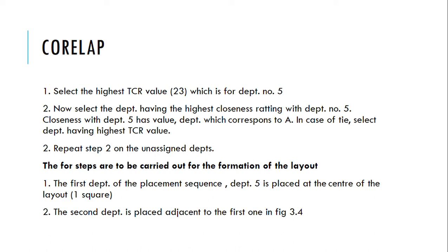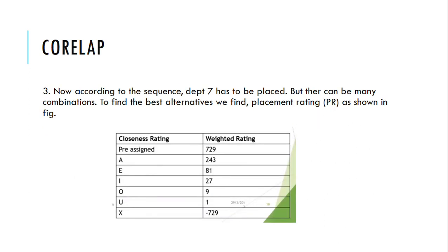For the formation of the layout, the first step is to place department 5 at the center of the layout. The second department is placed adjacent to the first. According to the sequence, department 7 has to be placed next, but there can be many combinations. To find the best alternative, we calculate the Placement Rating (PR) as shown in the figure.